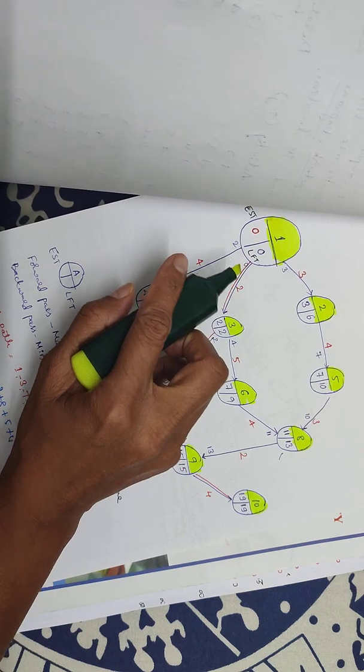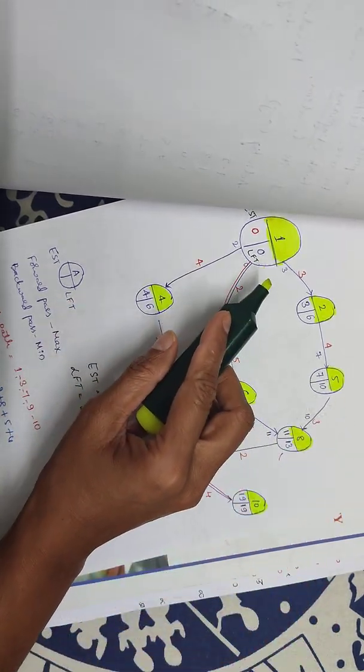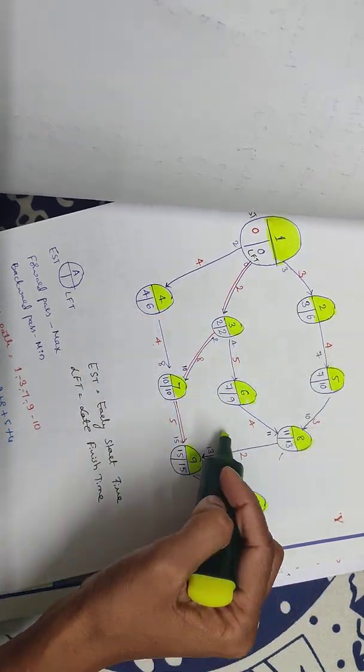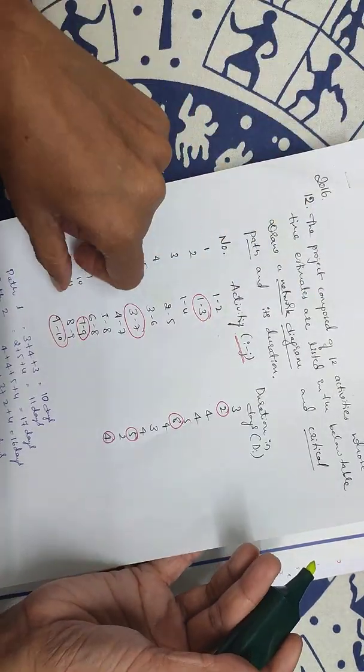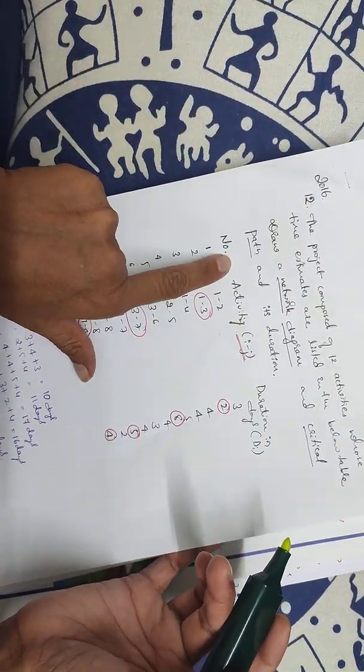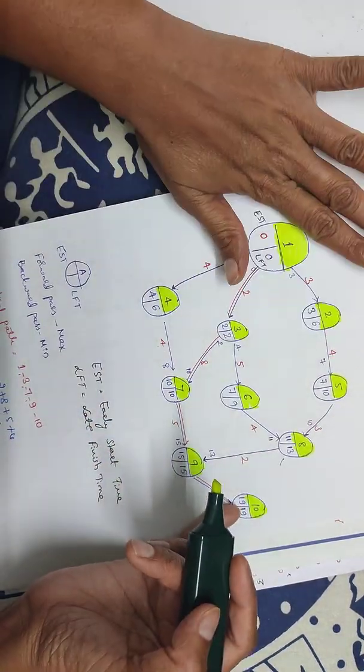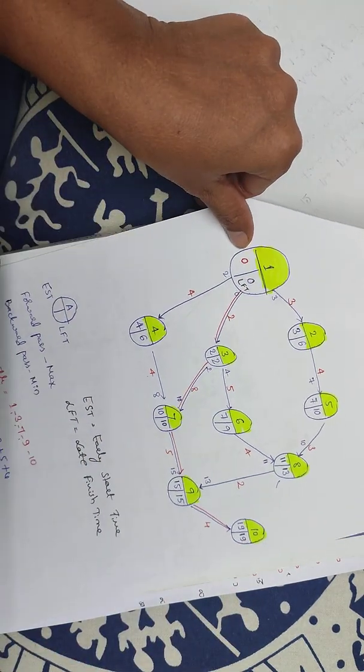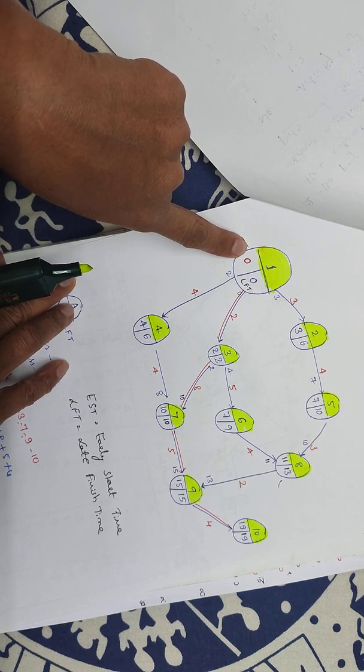This is the network diagram. We'll start with this activity. Next we'll find the critical path and duration. We'll start with the forward pass. First early start time is 0.